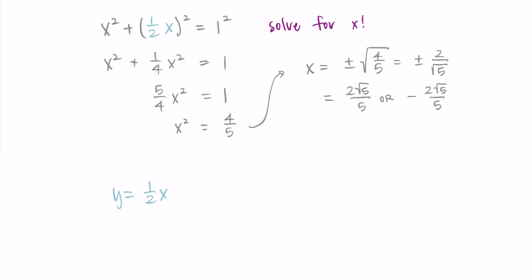So y is equal to 1 half x. So in my positive case, I have y is equal to 1 half times positive 2 root 5 over 5. And then for the negative case, I have y is equal to 1 half times negative 2 root 5 over 5. And so simplifying both of these, I'm getting that y is equal to positive root 5 over 5, and y is equal to negative root 5 over 5.